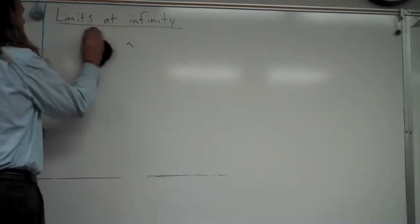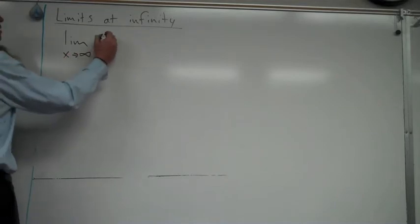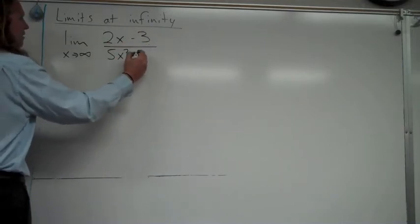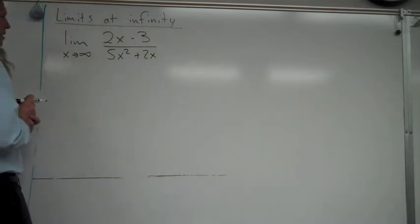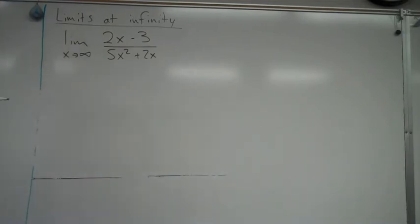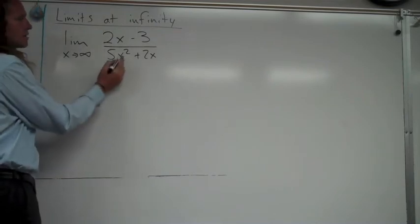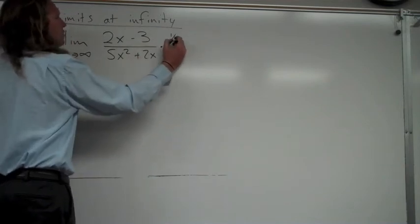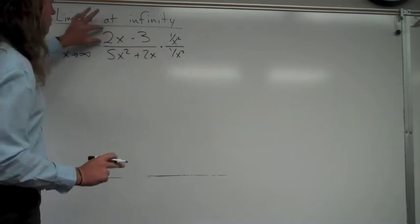Now let's look at a series of three examples with small changes on each one. Starting with the limit as x approaches infinity of 2x minus 3 over 5x squared plus 2x. For a rational function like this, we look in the denominator for the largest exponent — in this case x squared. We multiply by 1 over x squared on the top and 1 over x squared on the bottom. I chose x squared because it's the largest exponent in the denominator, ignoring the numerator when choosing.